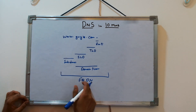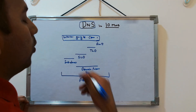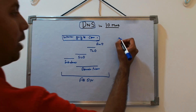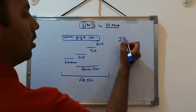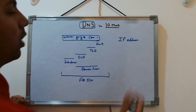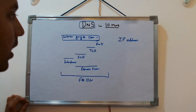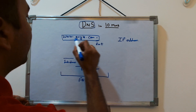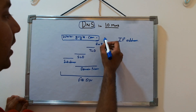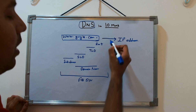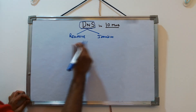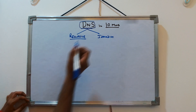Everything from subdomain to the root dot is known as FQDN — fully qualified domain name. Over the internet, one device can communicate with another through IP address only. So www.google.com needs to be converted to an IP address, and this is done through DNS — domain name system.